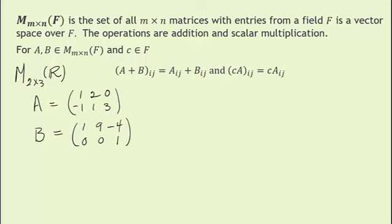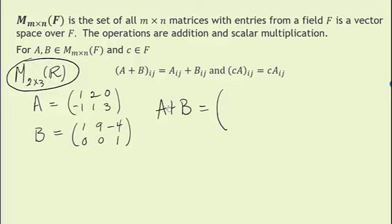Here are example matrices A and B. Let's just add A and B. A plus B, adding component-wise, gives us: in the top row 2, 11, -4, and adding components in the bottom row pair-wise, we have -1, 1, and 4. Now let's do it with the notation: take (A+B)_{1,3} — that means first row, third entry. Our notation says that is A_{1,3} plus B_{1,3}. A_{1,3} is 0 and B_{1,3} is -4, and we get -4, which was the (1,3) entry in the matrix A+B.